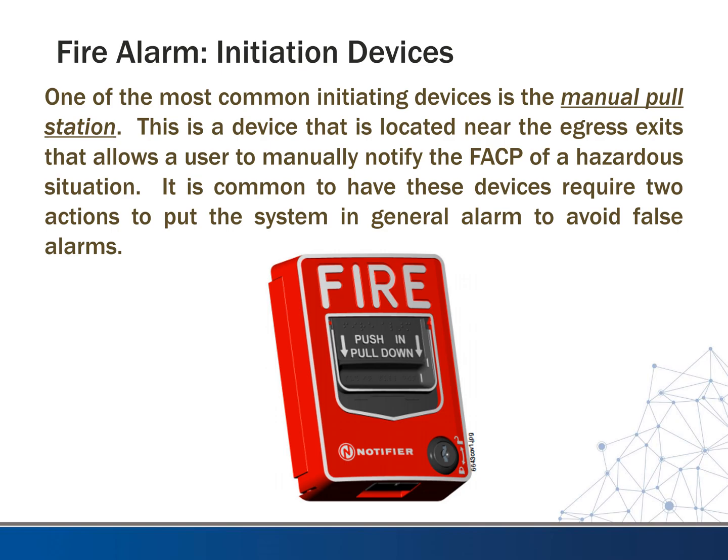Most fire alarms specified today require pull stations to have dual action. Sometimes there's a clear plastic cover over the device, so you have to lift the cover and then pull down. In schools especially, lifting the cover will set off a local alarm — it doesn't put the fire alarm control panel into supervisory or general alarm, just a small local alarm. You then have to pull down the lever to actually put it in general alarm. This avoids nuisance trips because when kids pull the cover up and hear the local alarm, it usually scares them enough that they put it back down.